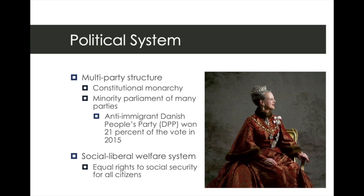The political system in Denmark is a multi-party structure that has a constitutional monarchy. The current queen is Queen Margaret. The parliament is made up of many different parties — as of right now it's just about 16 different parties. The group that won in 2015 is the anti-immigrant Danish People's Party and they won 21% of the vote, which is very significant and they therefore have power.